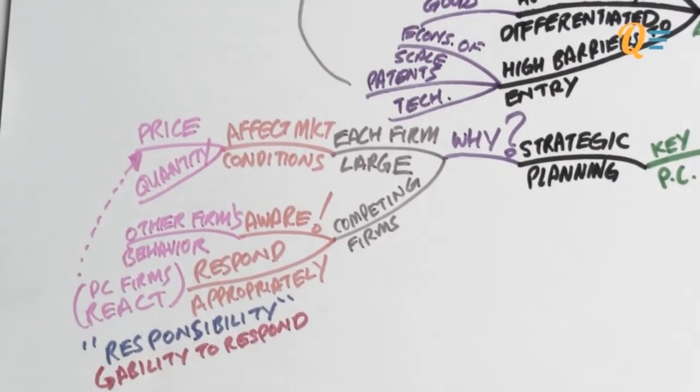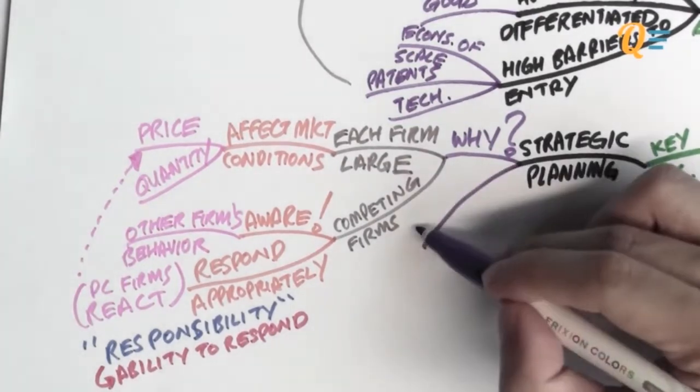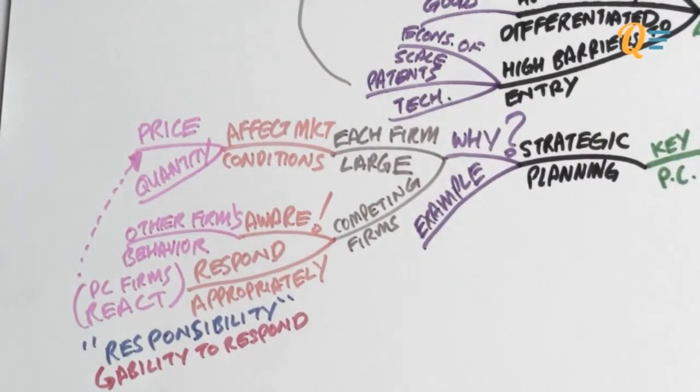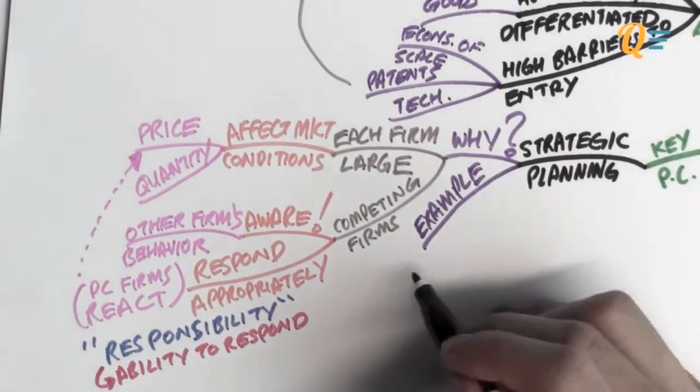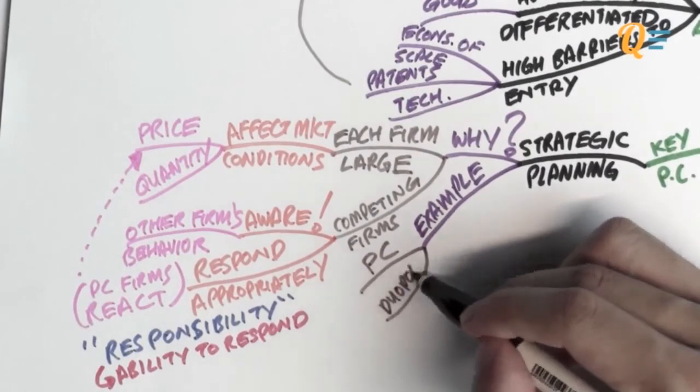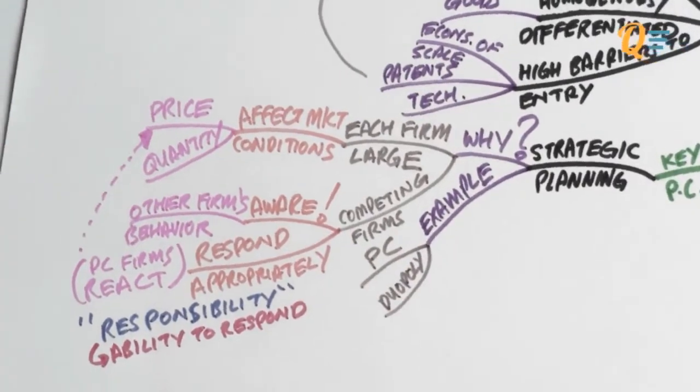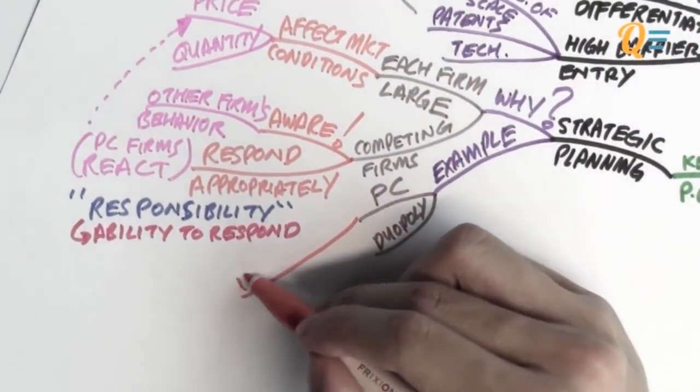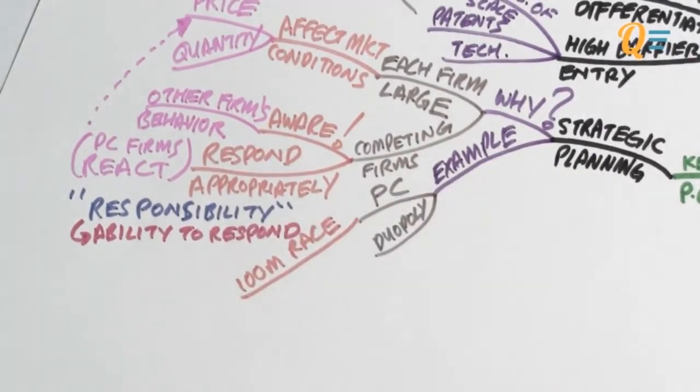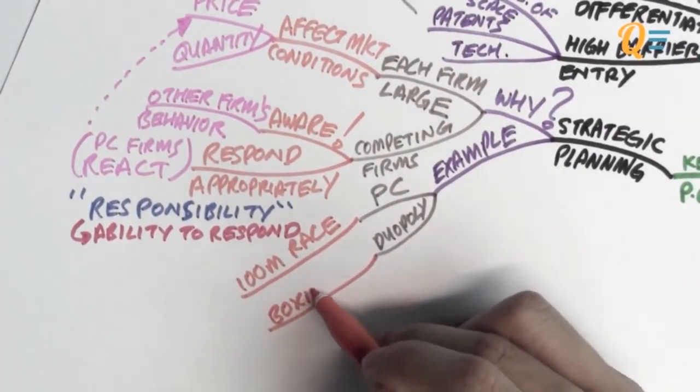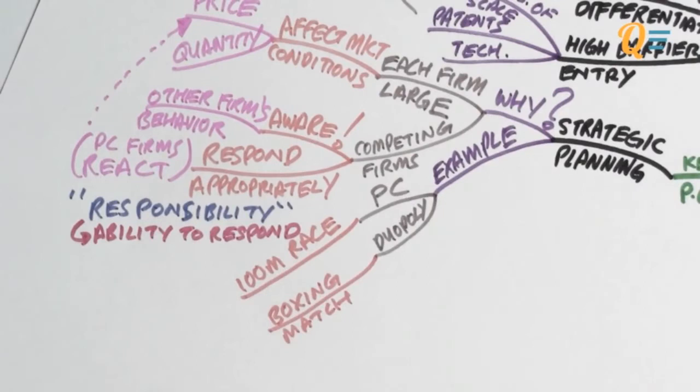Respond to who? Respond to what the other firm is doing. You guys are competing, you have to understand what the other guy is doing. So over here at Quickenomics, we love sports very much. So I'm going to use two different sports to illustrate the difference between a perfect competitive market as well as a duopoly. So imagine that a perfect comp is actually a 100-meter race, whereas a duopoly is actually a boxing match.